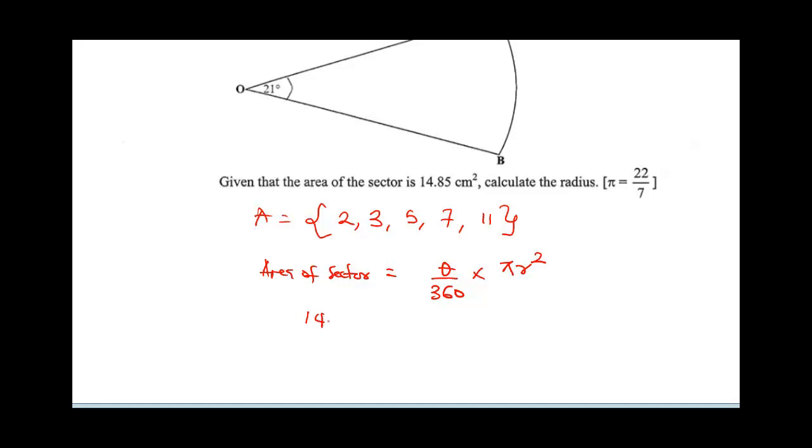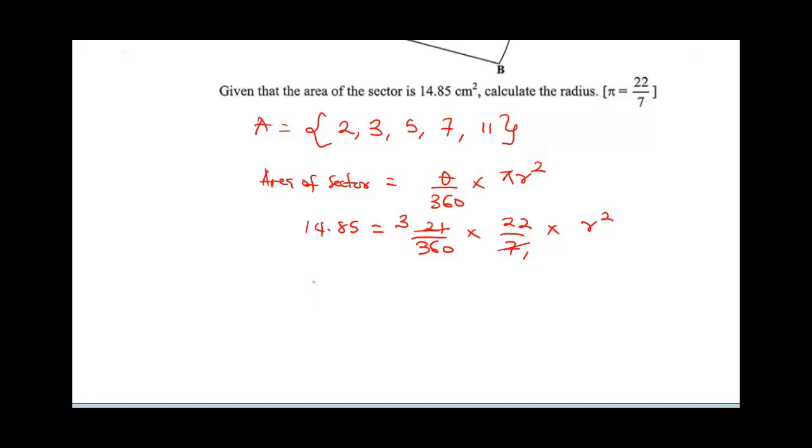The formula for the area of the sector is given as theta over 360 multiplied by pi R squared. We've been given the area of the sector as 14.85 equals, the angle is 21 over 360 times pi is given as 22 over 7 times R squared. So 7 in 21 is going to give us 3. So at this point, we'll have 14.85 equals 3 times 22, which gives us 66 over 360 R squared.